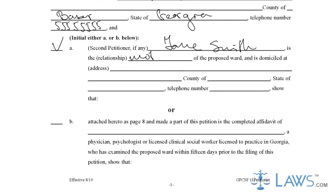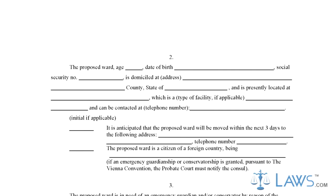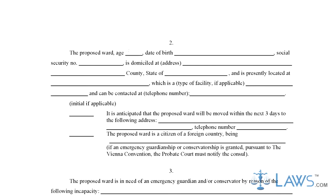Step 2. In Part 2, provide the age, date of birth, social security number, domicile, current address, and telephone number. The petitioner must initial all applicable subsections and provide necessary information.